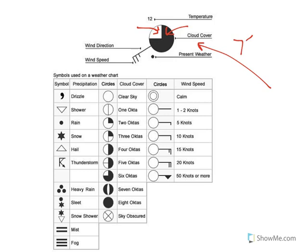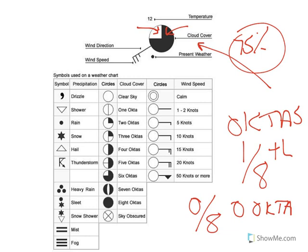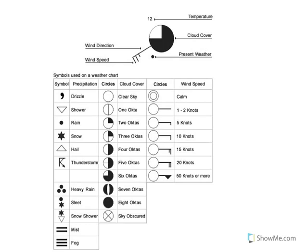You might say that is 75%, but for weather we don't calculate cloud cover as a percentage. Rather, we use something called octas — the number of eighths of the sky that is covered in clouds. If you've got a beautiful blue day with not a single cloud, you would say zero eighths or zero octas. If the sky is completely overcast, you would have eight eighths or eight octas. If half the sky is covered, you would say four eighths or four octas.